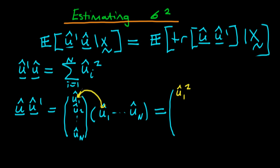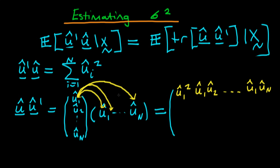The second term is going to be û₁ times û₂ — that's going to be the next component along in the next column. So that's just going to be û₁ times û₂. And then we continue all the way to the last column in the first row, which is just going to be û₁ times û_n. The first element of the next row is just going to be û₂ times û₁, which is the same as û₁ times û₂ — so it looks like our matrix is going to be symmetric. The next component is û₂ squared.